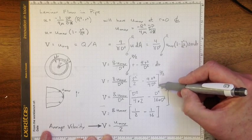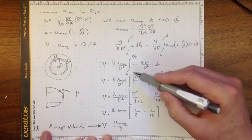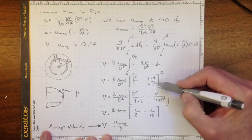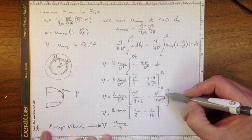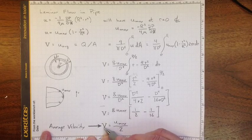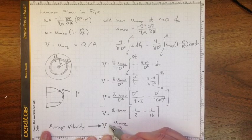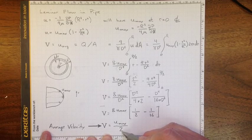If we perform that integration, being careful not to make the mistakes I made as I went through it the first time, we'll eventually work our way down and find that the average velocity is just the maximum velocity divided by 2.